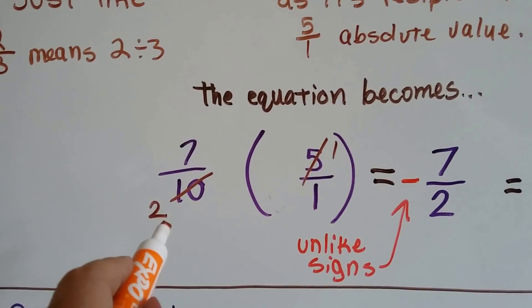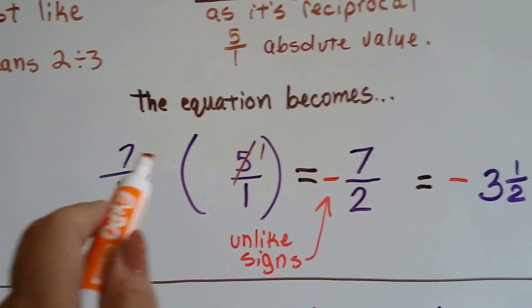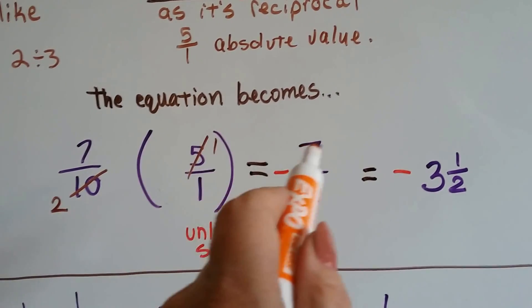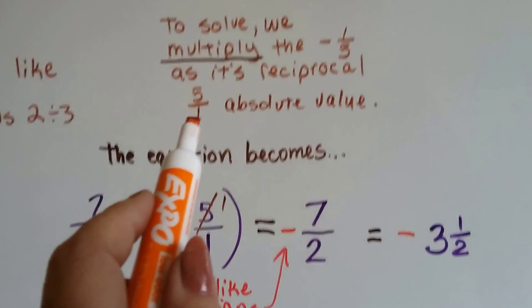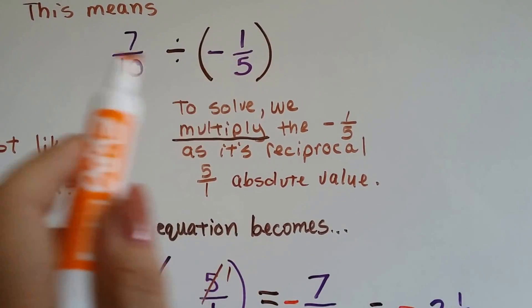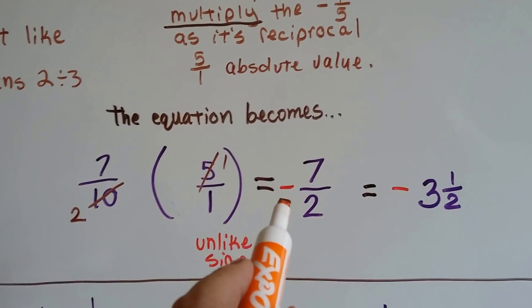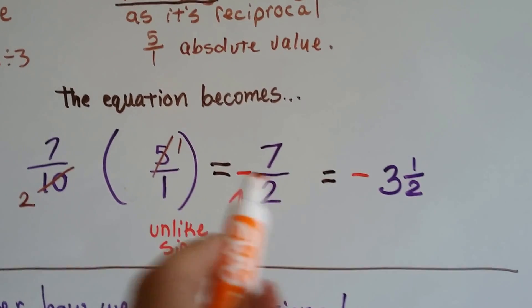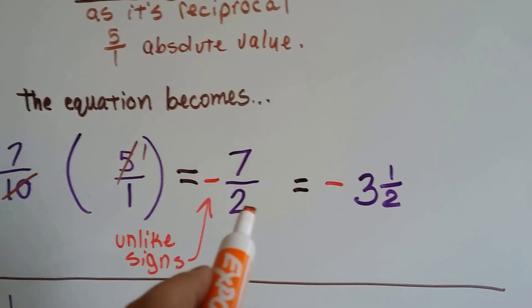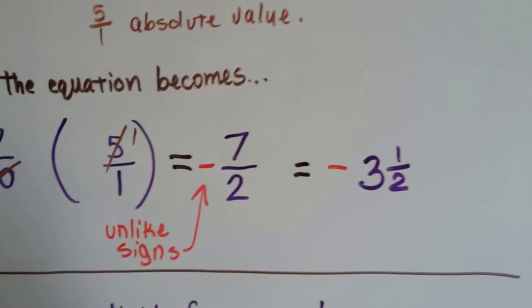Five goes into 10 two times. That makes it easier for us to simplify because 7 times 1 is 7 and 2 times 1 is 2. Because the signs were unlike, we have a negative and a positive, it's unlike signs, it's negative. We've got 7 over 2. And when we simplify this, 2 can go into 7 three times with a half left over. So we've got negative 3 and a half.